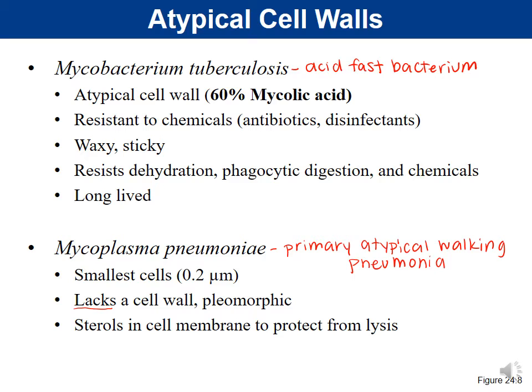Mycoplasma are among the smallest bacterial cells at about 0.2 micrometers — one-fifth the size of E. coli at about 1 micrometer. Scientists took a long time to discover them because they're so small; they were originally mistaken for viruses. Because they lack a cell wall, they are pleomorphic, meaning they can take on multiple shapes.